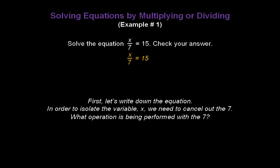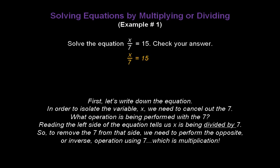And in order to isolate the variable x, we need to cancel out the 7. What operation is being performed with the 7? Take a look at just the left-hand side. Reading the left side of the equation tells us x is being divided by the number 7. So to remove the 7 from that side, we need to perform the opposite or inverse operation using the 7, which is multiplication.